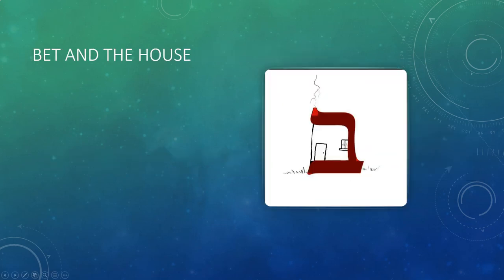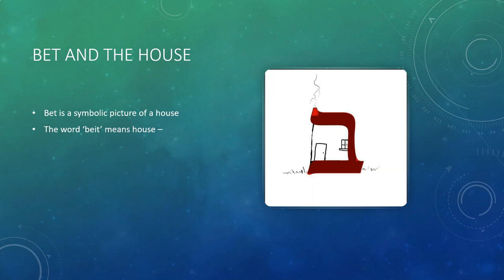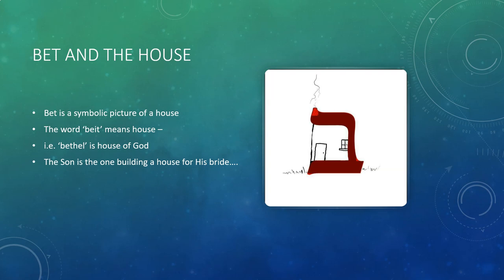If we look further into the letter Bet, we'll see that it has a meaning of a house. Here someone has drawn a cartoon to make Bet look a bit more like a house with a chimney, a window, and a door. The word Bet means house — for example, Bethel means house of God, or Bethlehem means house of bread. And the Son is the one who is building a house for his bride. So it again connects back to the Son.